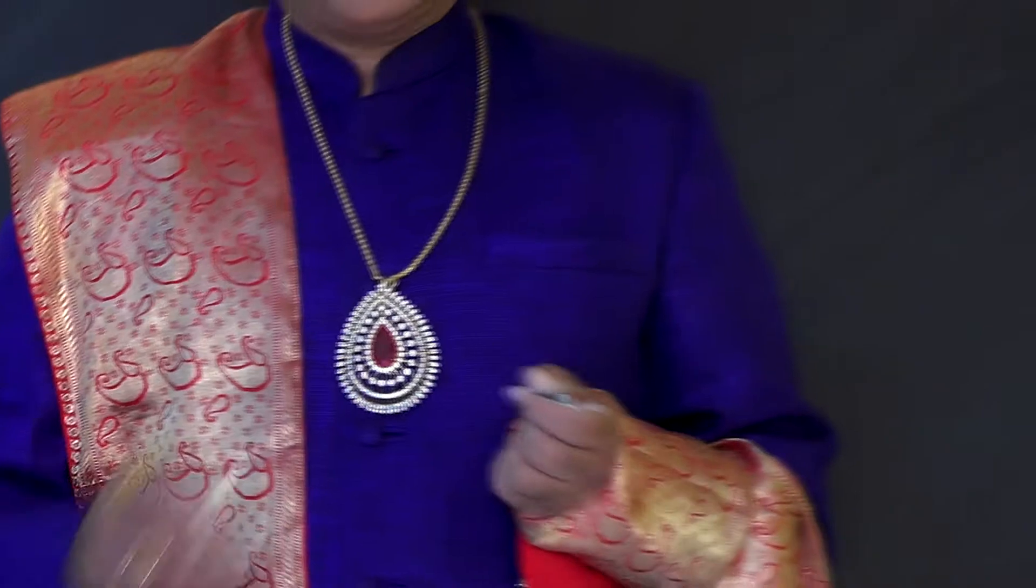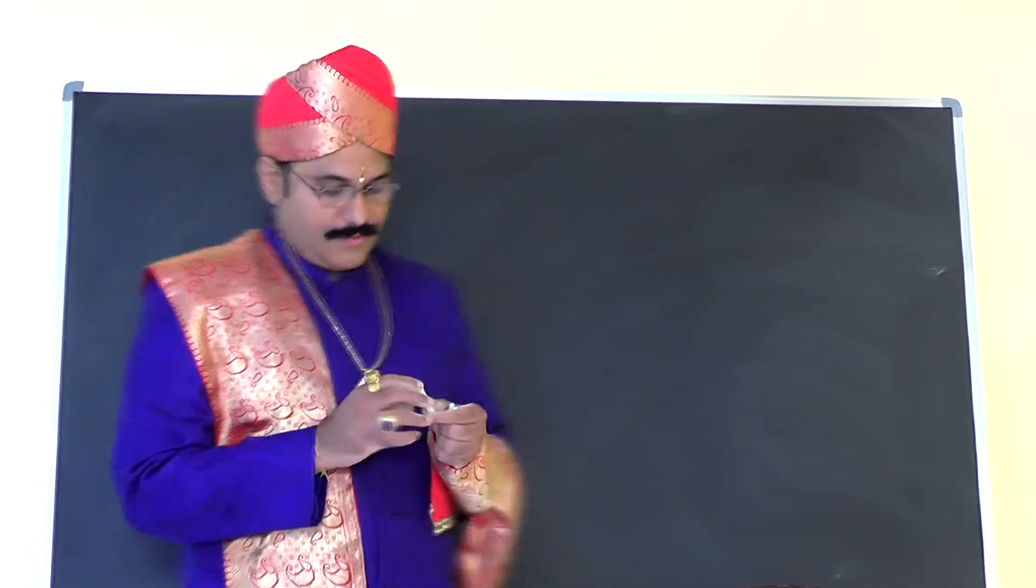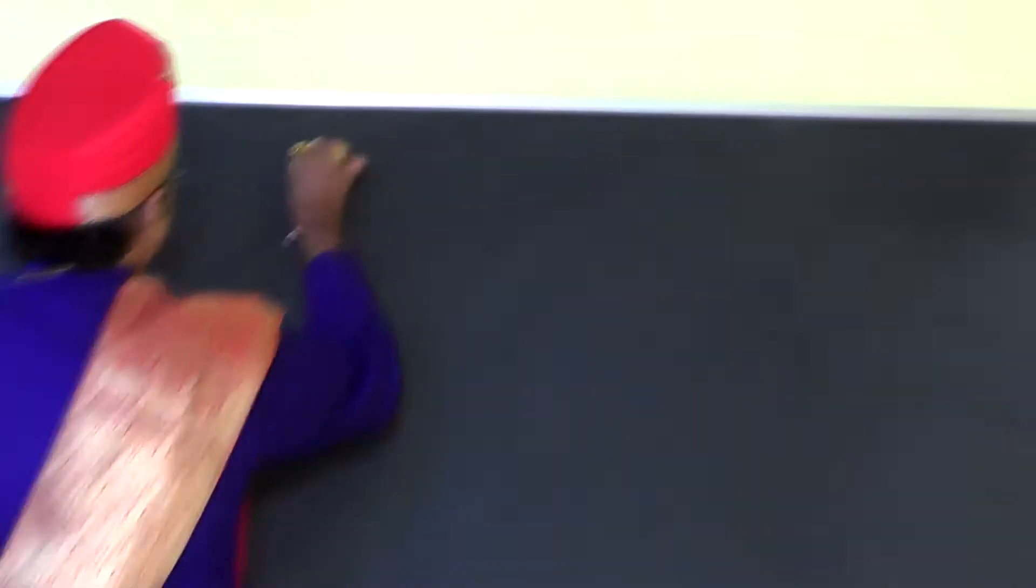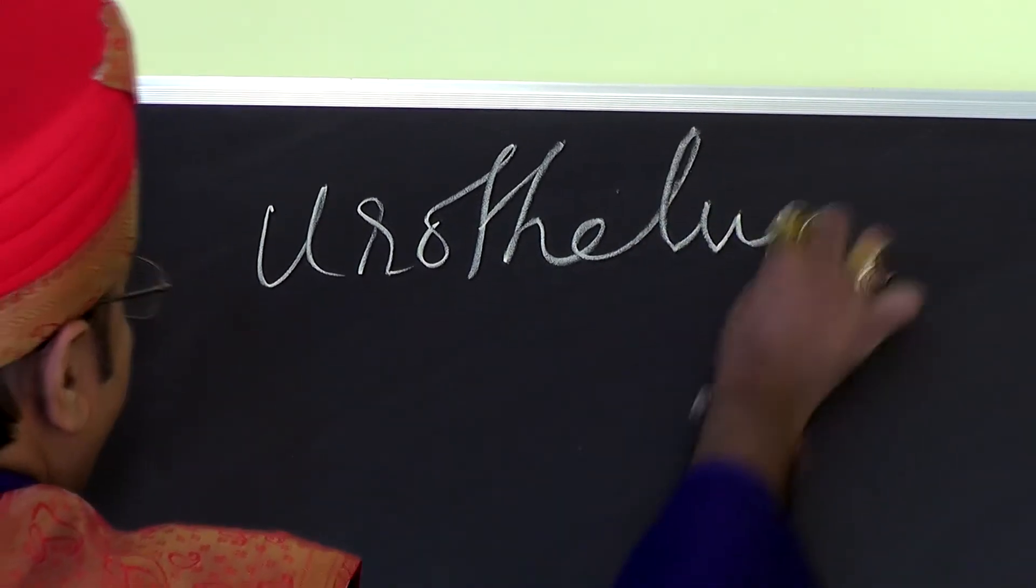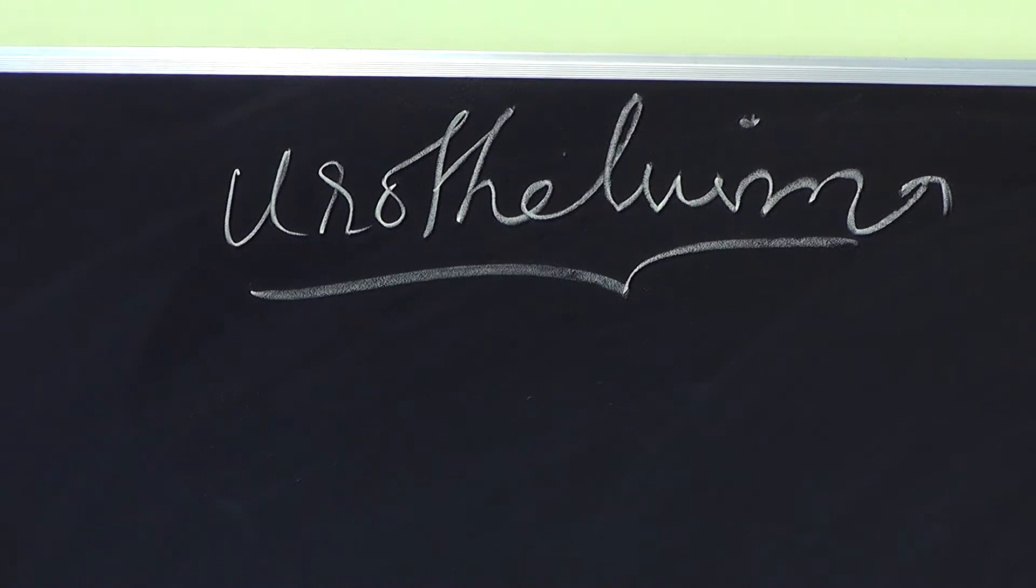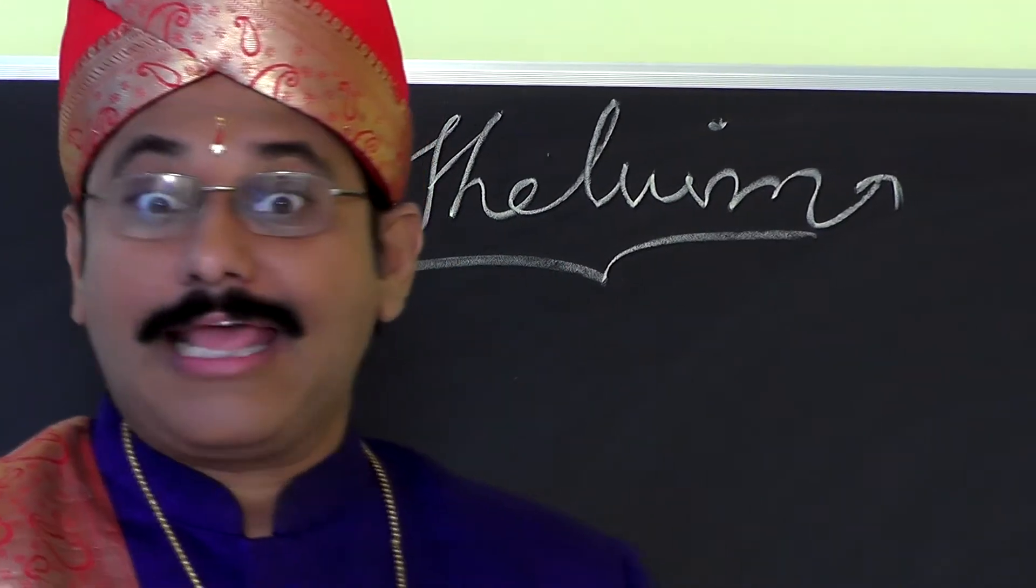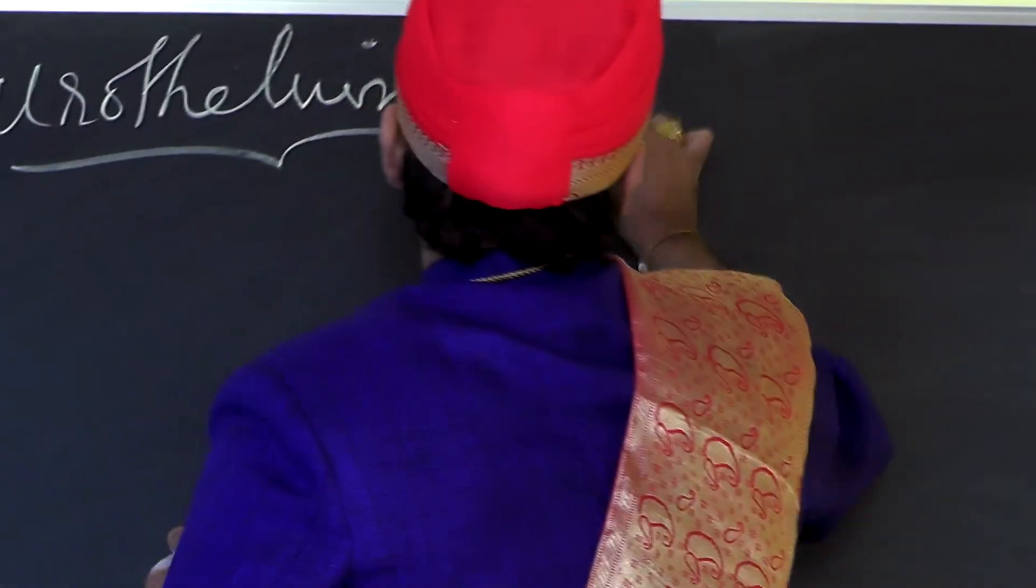We are going to learn about a special epithelium called urothelium or transitional epithelium. Why is it called urothelium? Because it is present in the urinary tract exclusively. You can also call it transitional epithelium.